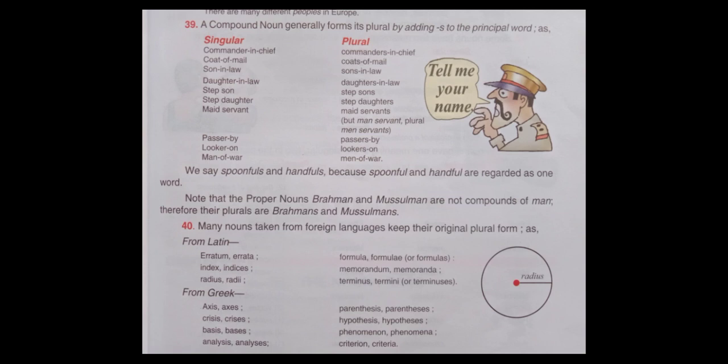A compound noun generally forms its plural by adding S to the principal word, as: commander-in-chief, commanders-in-chief; court-martial, courts-martial; daughter-in-law, daughters-in-law; step-son, step-sons; step-daughter, step-daughters; maid-servant, maid-servants; but man-servant, plural men-servants; passer-by, passers-by; looker-on, lookers-on; man-of-war, men-of-war. We say spoonfuls and handfuls because spoonfuls and handfuls are regarded as one word. Note that the proper nouns Brahmin and Mussulman are not compounds of man. Therefore, their plurals are Brahmins and Mussulmans.